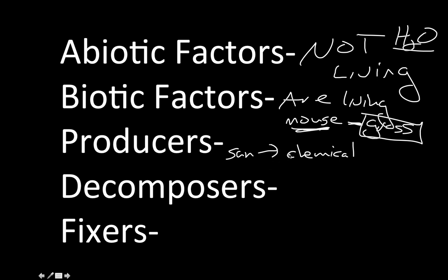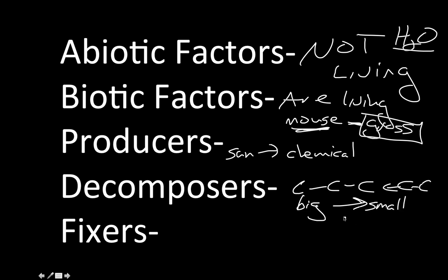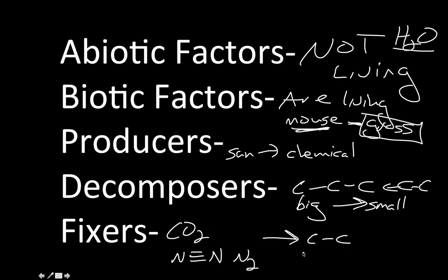A decomposer will take big complex carbon or nitrogen molecules and break them down into small molecules. Fixers are usually things that take something like carbon dioxide or nitrogen gas and fix it — bond or chemically react those things to a different carbon molecule. Now that we have the vocabulary, let's move on to the cycles.